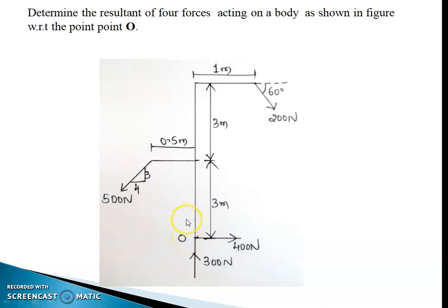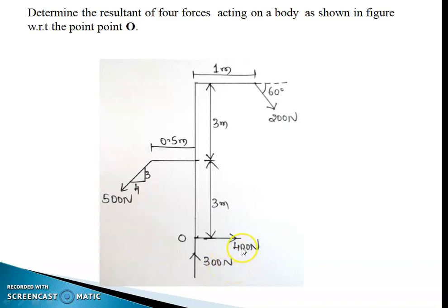I need the moment of four forces: Force number one, 200 newton, inclined at 60 degrees to the x-axis; a force of 500 newton which makes a slope of 3 by 4 (three vertical, four horizontal); and two more forces — 300 newton, a purely vertical force, and 400 newton, a purely horizontal force.